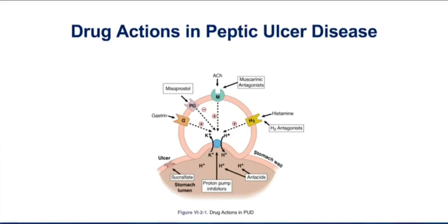Drugs that block the histamine H2 receptor have been very effective for a long time in treating peptic ulcers. That's going to block one of the three major pathways for acid production. But today, proton pump inhibitors have become even more popular because they have a greater efficacy in stopping acid production — binding to the proton pump stops all three physiologic pathways.